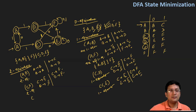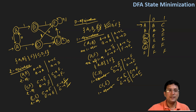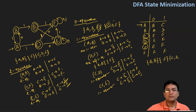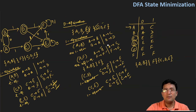Checking the pair C and E: C on zero goes to E and E on zero goes to E — same, they will be in the same set. So C and E are also two equivalent. The outcome of two equivalence is the same as one equivalence: {A, B}, {F}, {C, D, E}. Since the outcome of one equivalence is the same as two equivalence, we have minimized the DFA.